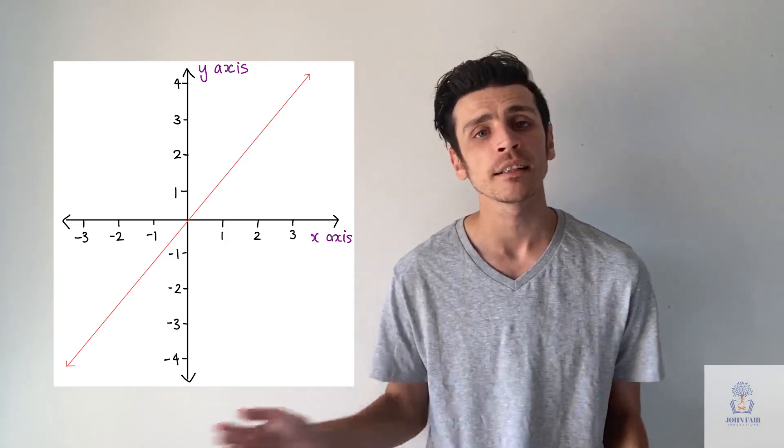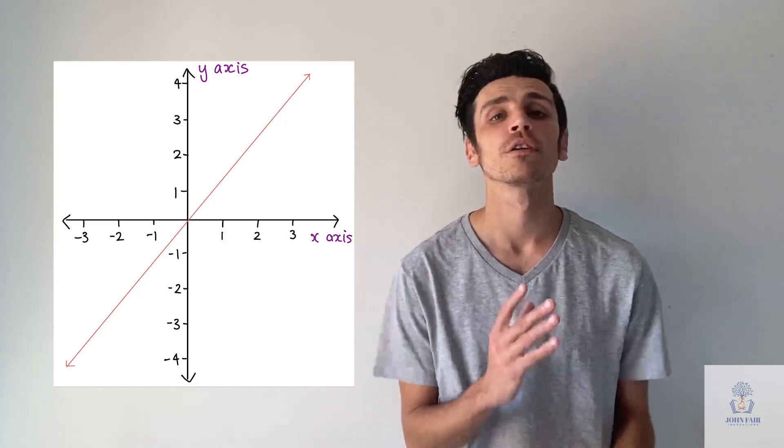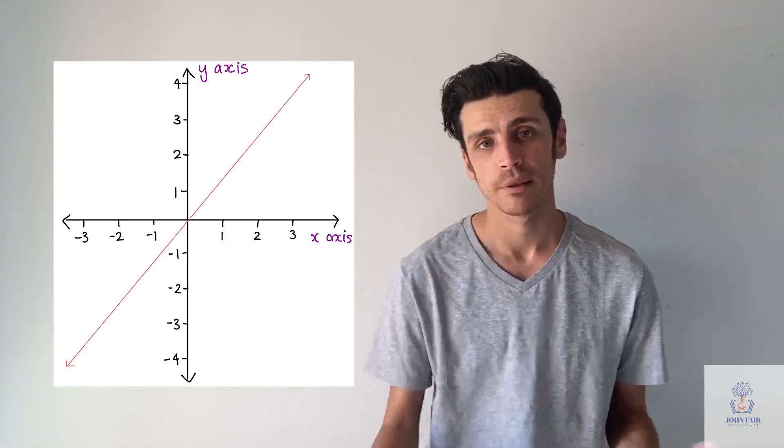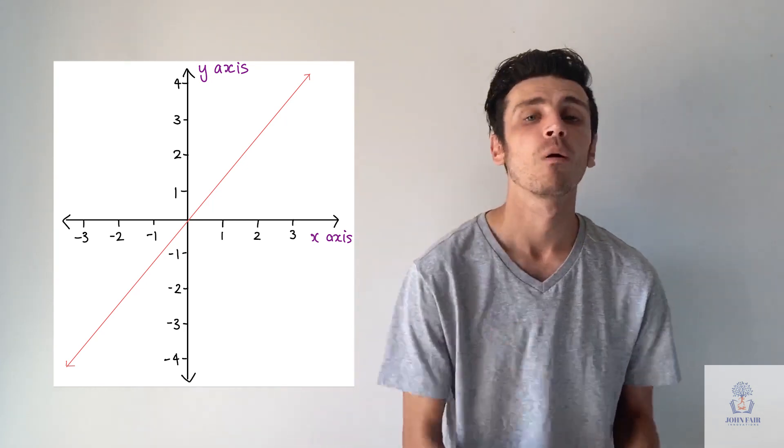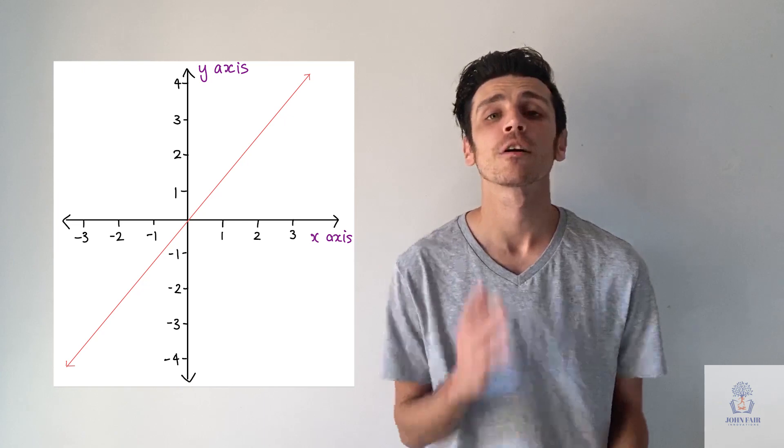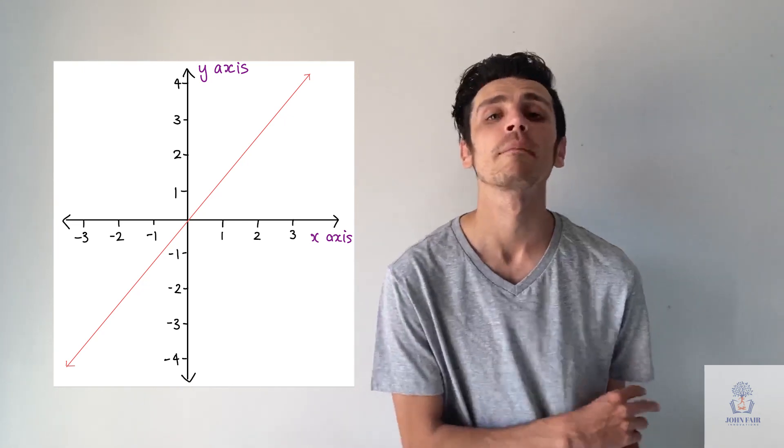Now the horizontal line, so the line going across, is your x-axis, and your vertical line, the one going upwards or downwards depending on which way you're looking at it, is your y-axis. So when we're talking about y components, we're talking about the vertical line, and when we're talking about our x component, we're talking about the horizontal line.